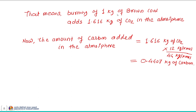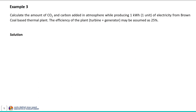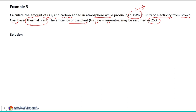Now let us solve one more example on a similar line, where we need to calculate the amount of carbon dioxide and carbon added to the atmosphere while producing 1 kilowatt hour of electricity. The fuel used is brown coal in a thermal power plant, and the efficiency of the plant (turbine plus generator) is given as 25%. Based on this data, we need to calculate the amount of CO2 and carbon added to the atmosphere while producing this electricity.